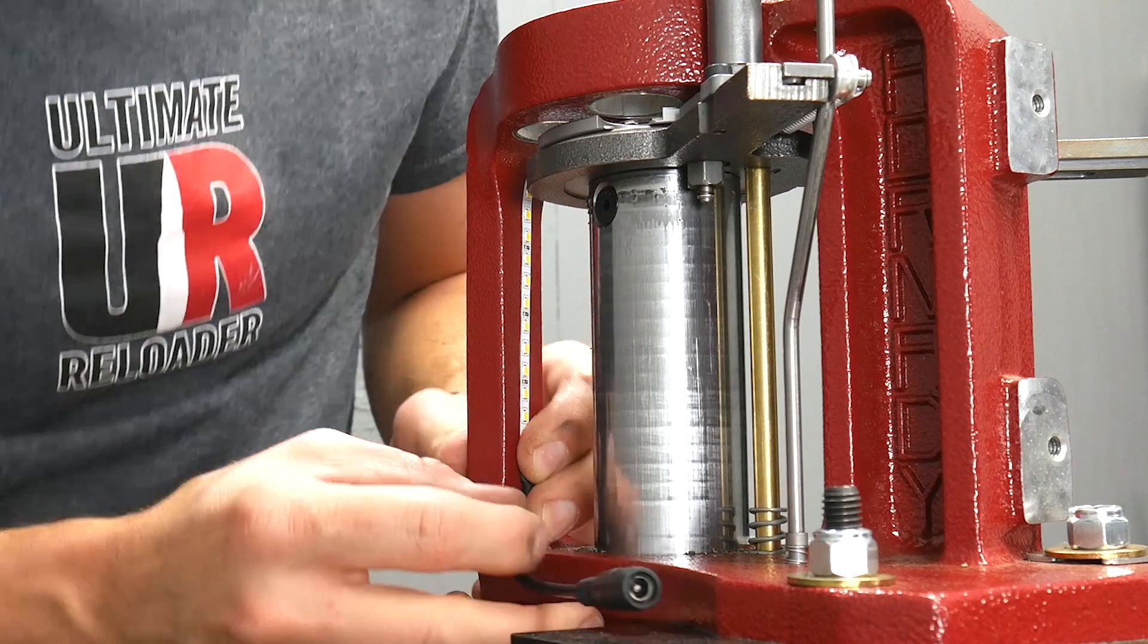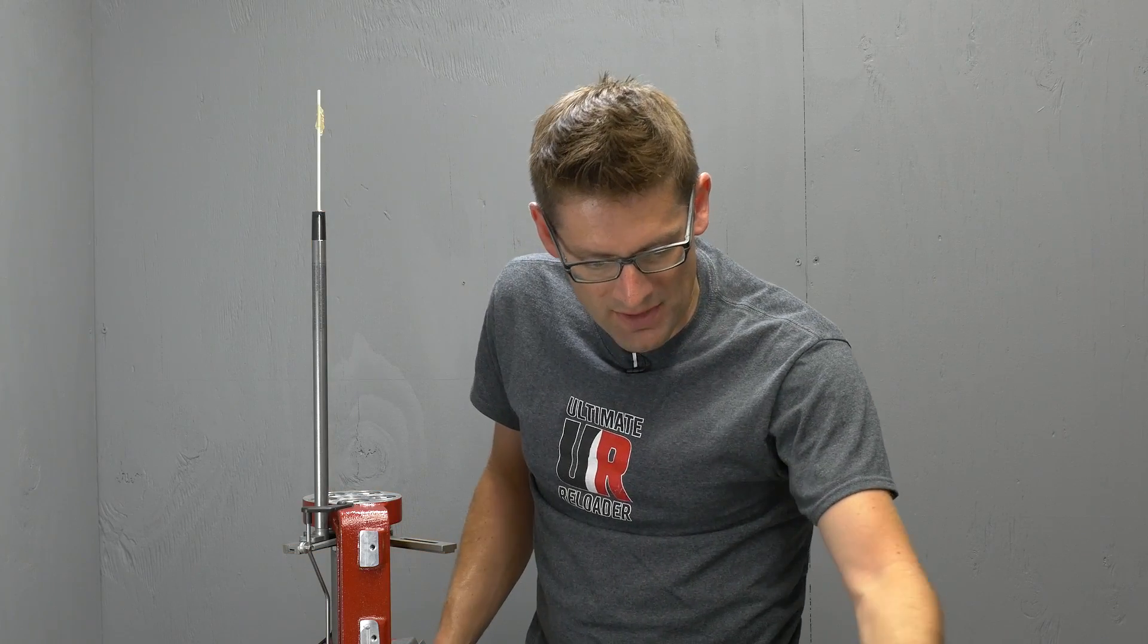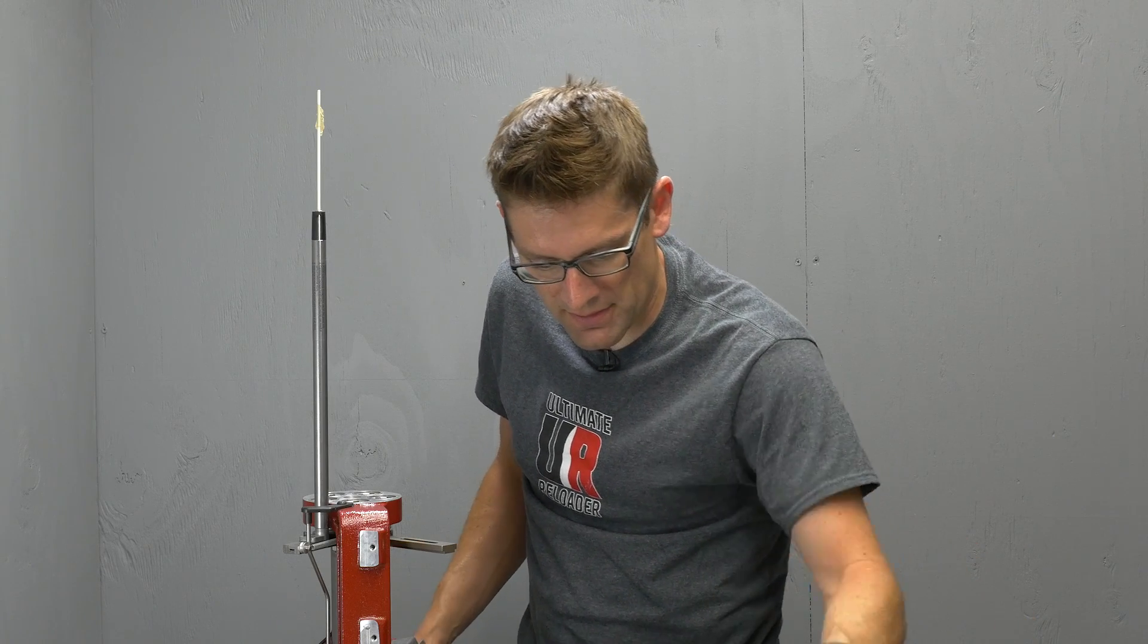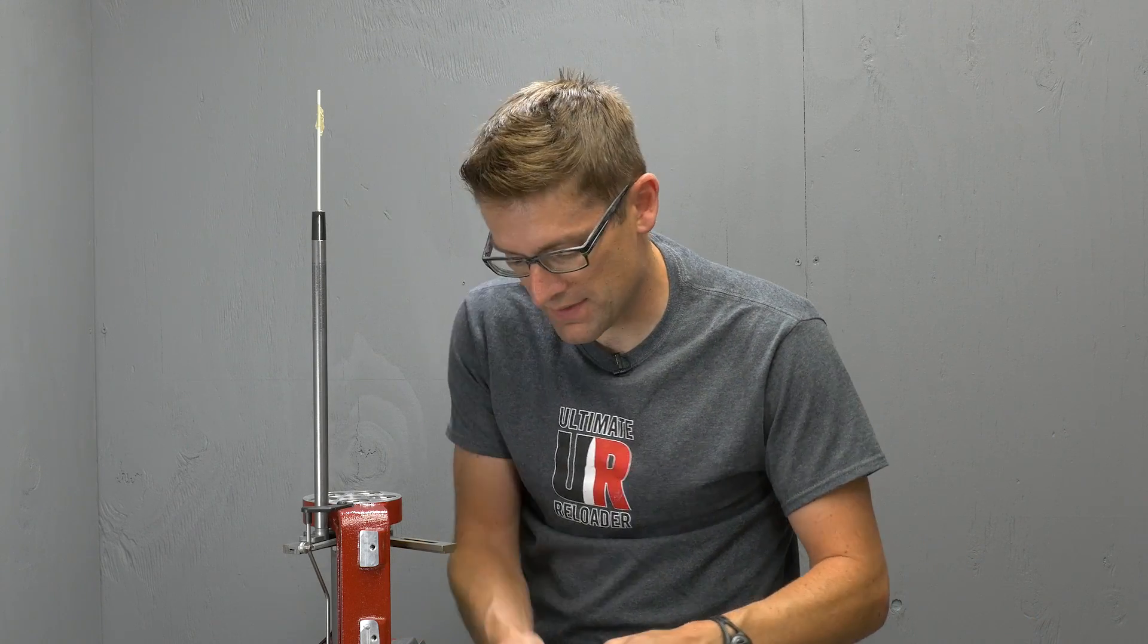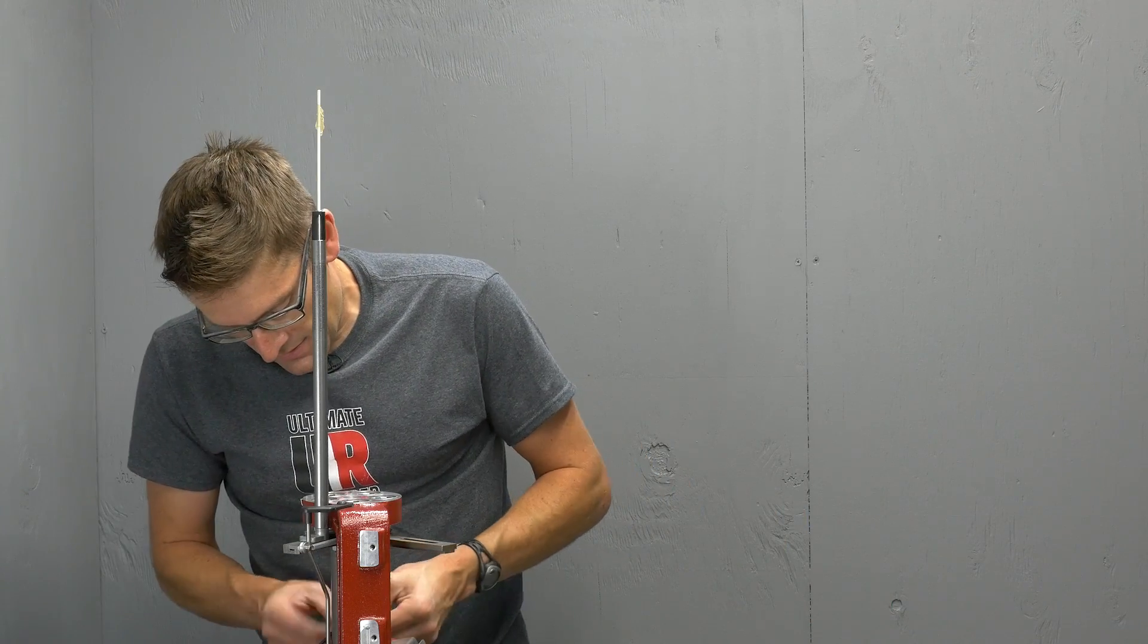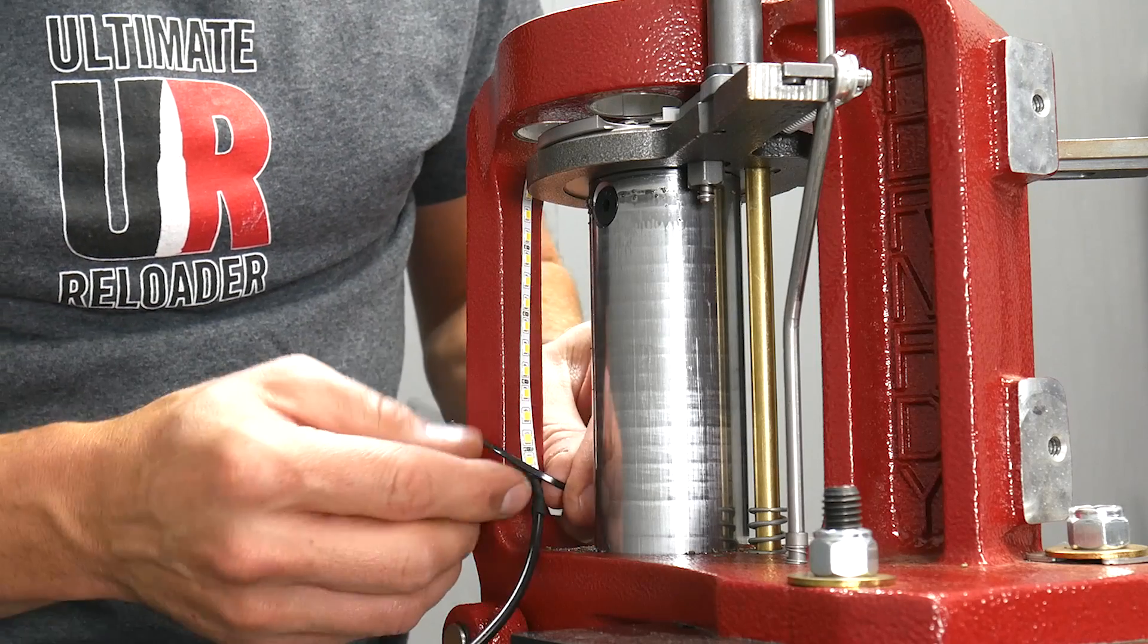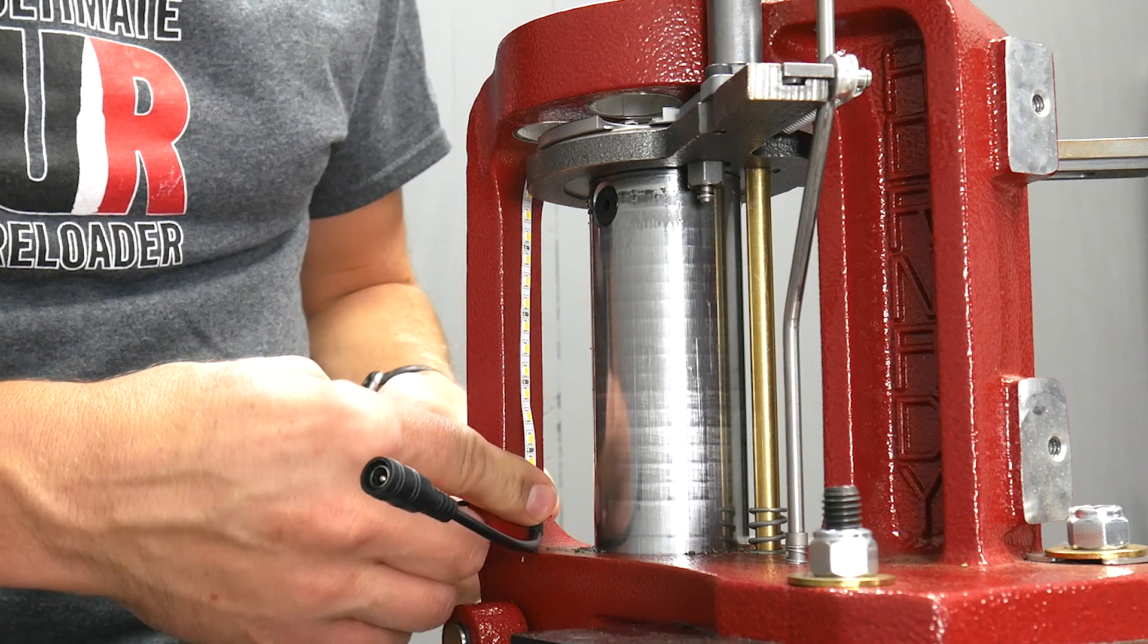So now we can use our large zip tie that came in the kit. Unwrap this guy. It's got a little rubber band around it. And this is going to secure the cable at the bottom.